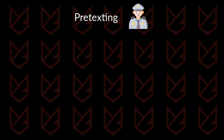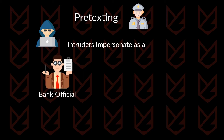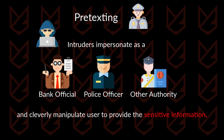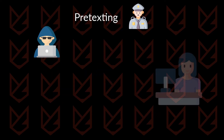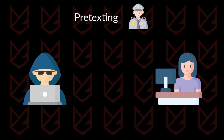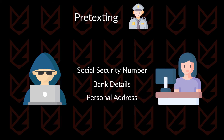In pretexting, the intruder would impersonate itself as a bank official, police officer, or any other authority and cleverly manipulate the user to provide sensitive information. The intruder would first establish trust by validating standard info such as name, date of birth, etc. This information is gathered during research. Much essential information is collected using pretexting, such as social security numbers, bank details, personal address, and more.